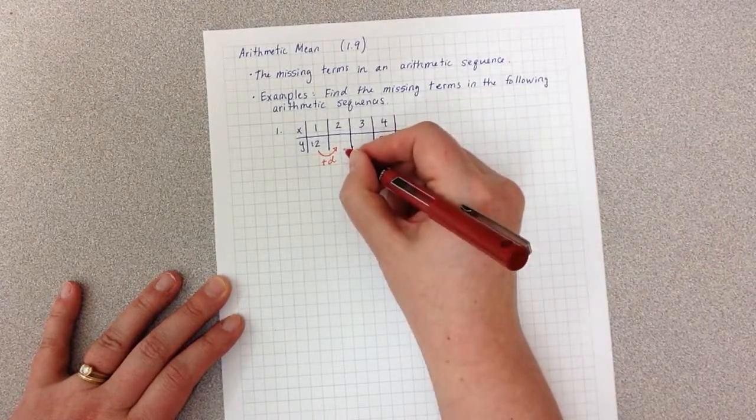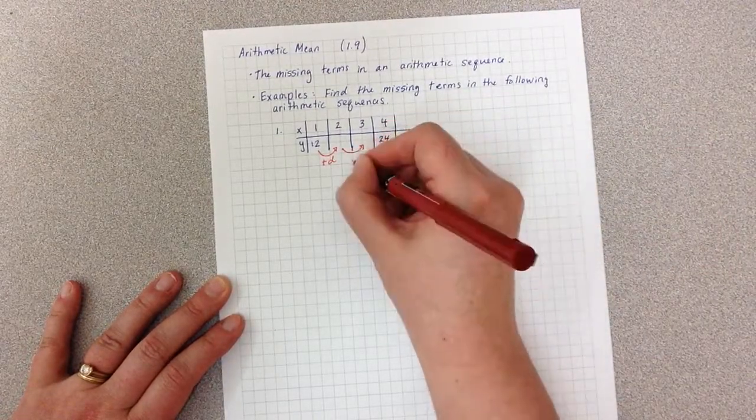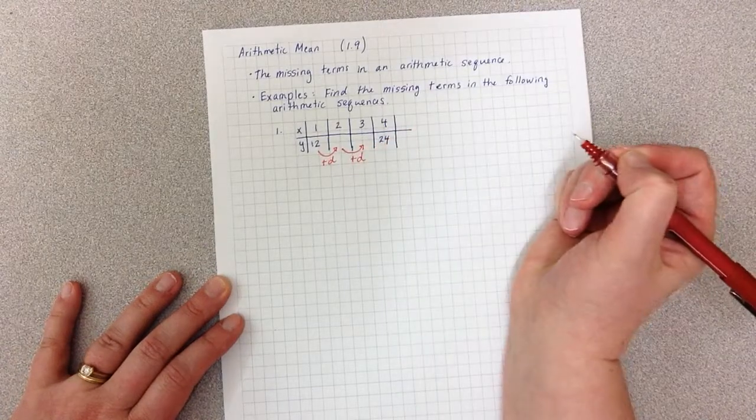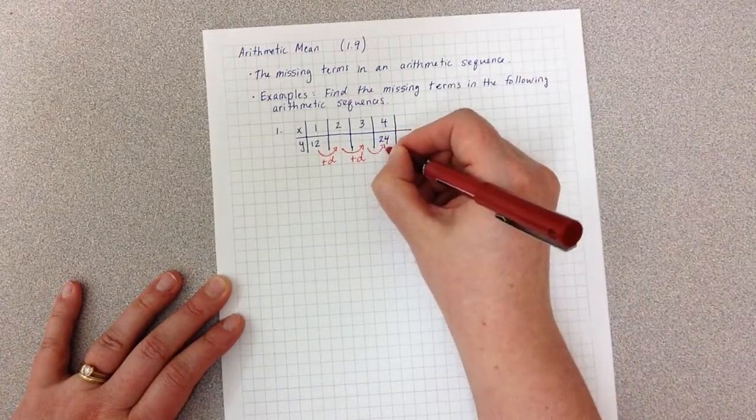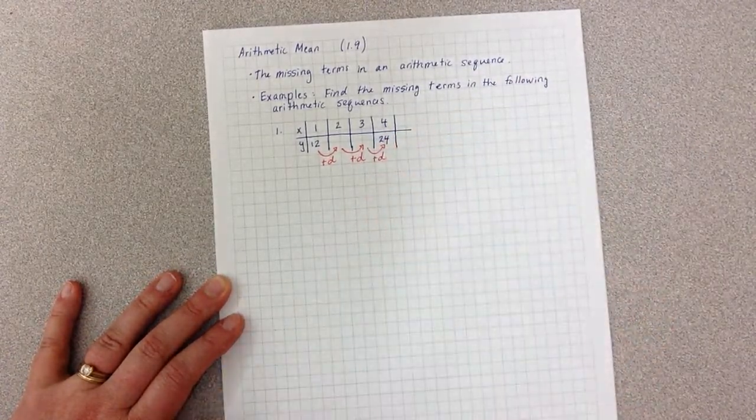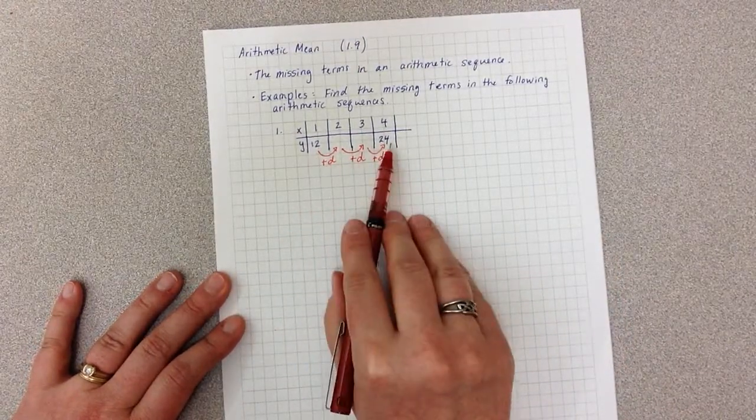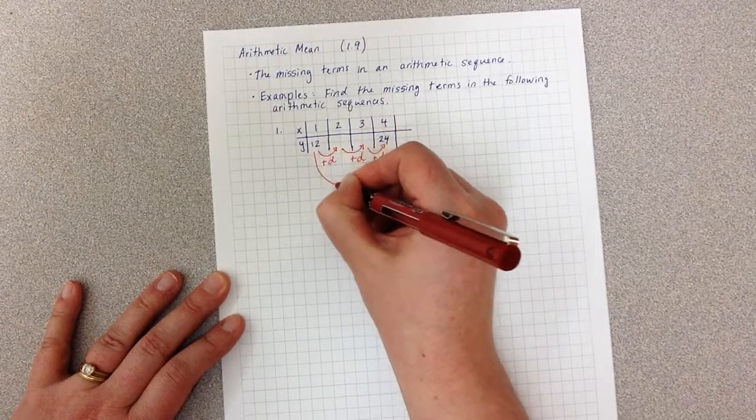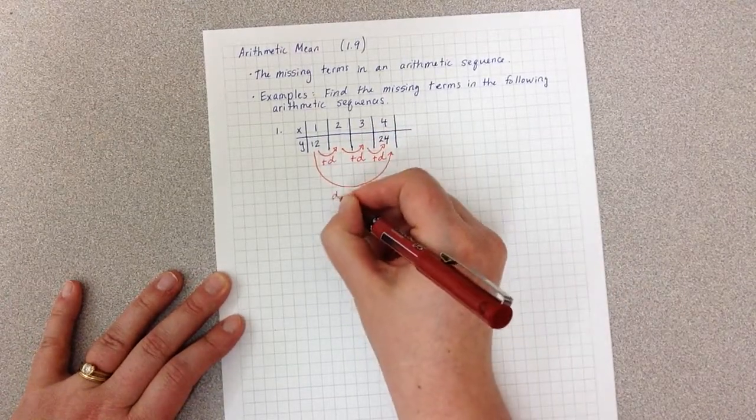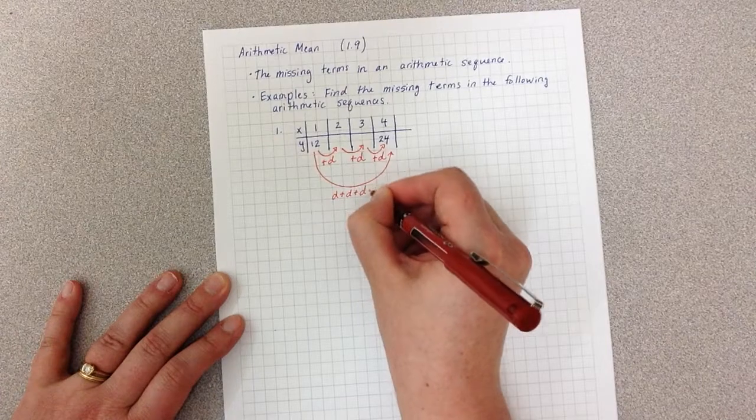and we use the letter D for common difference. From the second to the third, I'm adding D again. And from the third to the fourth, I'm adding D again. So I can make a connection between the first all the way to the fourth,